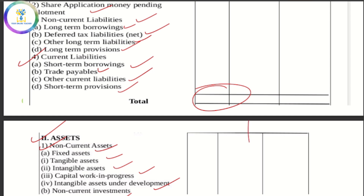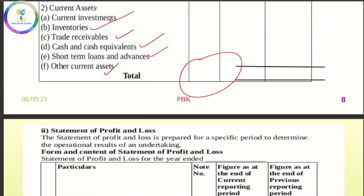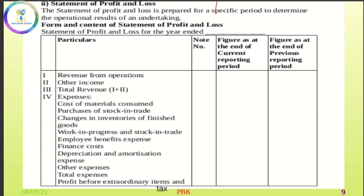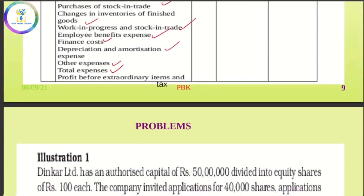The liabilities total and assets total are shown here — this is the balance sheet. Then the statement of profit and loss: revenue from operations and other income are listed first. Expenses include cost of materials consumed, purchase of stock in trade, changes in inventories of finished goods, work in progress and stock in trade, employee benefit expense, finance cost, depreciation, amortization, and other expenses. Then total revenue minus total expenses gives profit before extraordinary items.